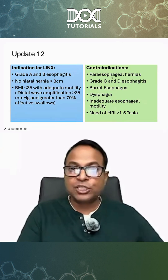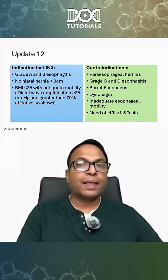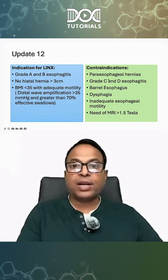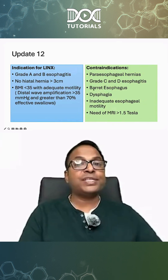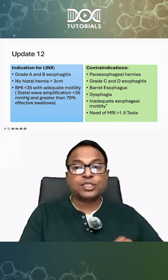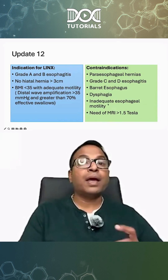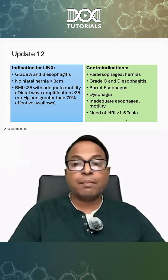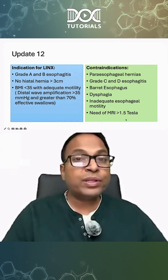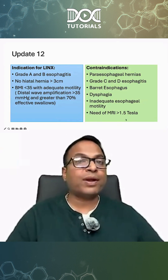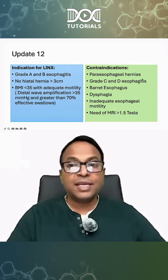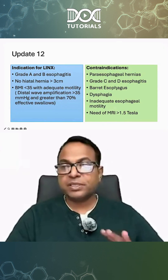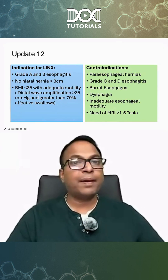Please understand — when there is a paraesophageal hernia, Grade C or D esophagitis, Barrett's esophagus, patient already having dysphagia, inadequate esophageal motility, or a patient who may need a Tesla MRI greater than 1.5 Tesla, in these cases LINX should not be done. This is a very important update.